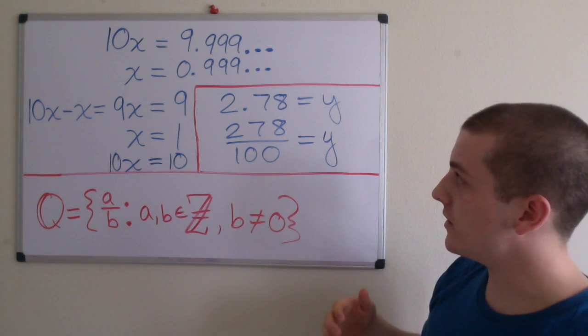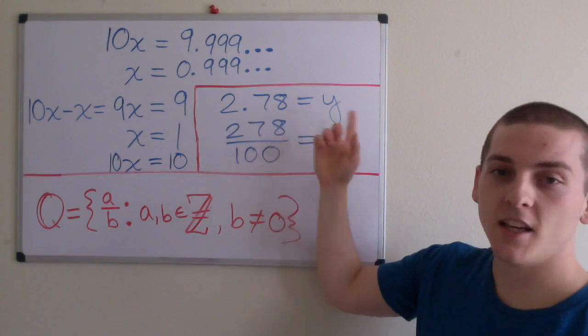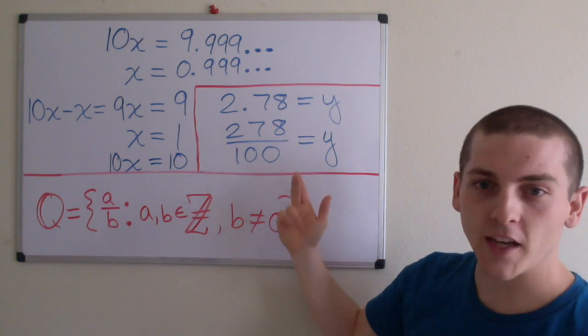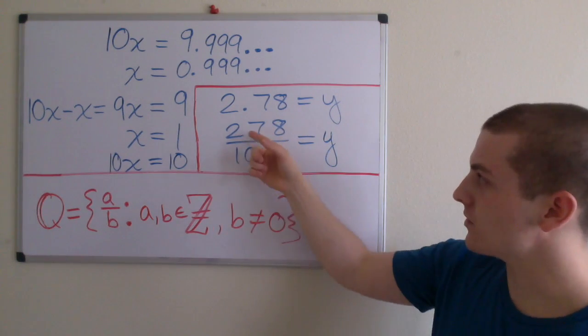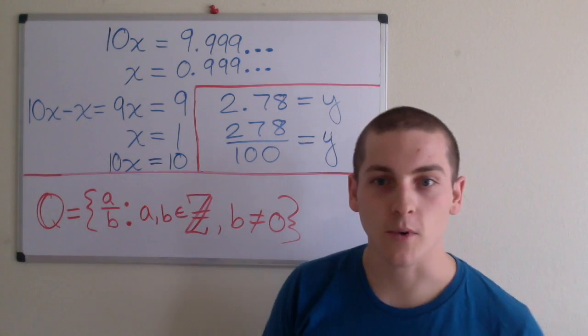Another example is terminating decimals. If we have 2.78 equal to y, then we can easily say 278 divided by 100 equals y as well. These are two integers, and it's another rational number.